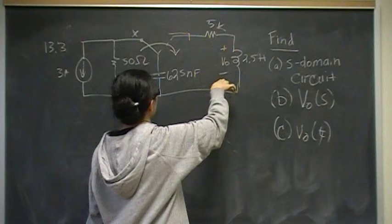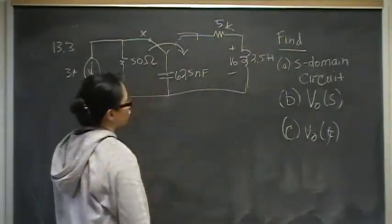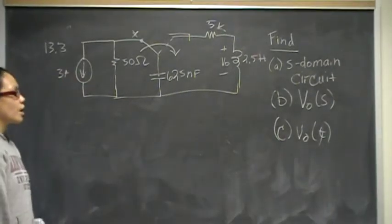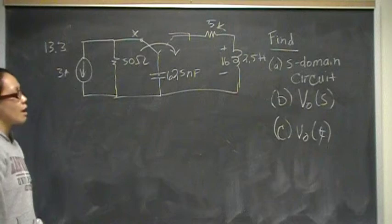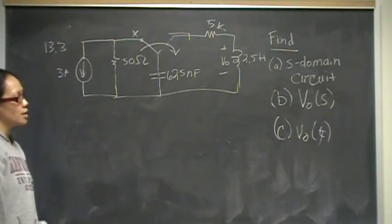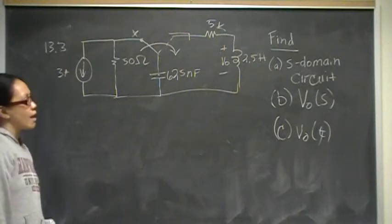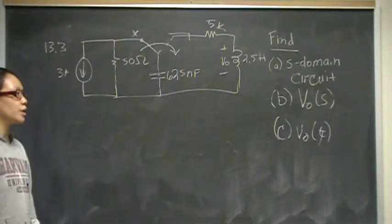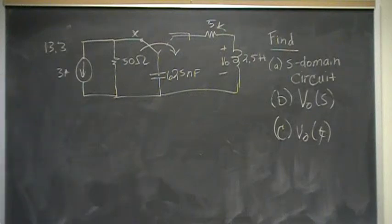There's a switch here and a capacitor here, 625 nF. At time when time starts, the switch flips over and energizes a 5K in series with a 2.5 Henry inductor. For part A, we're looking for the S domain circuit, and for part B, we're looking for the voltage, that V out in the S domain, and for part C, we're looking for the V out in the time domain. Let's get started.